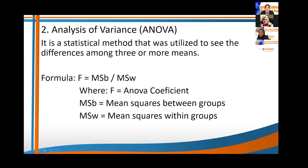For the analysis of variance, the researcher used ANOVA because of the number of respondents involving three or more means. The formula to get the ANOVA coefficient is: mean of squares between the groups divided by mean of squares within the groups.